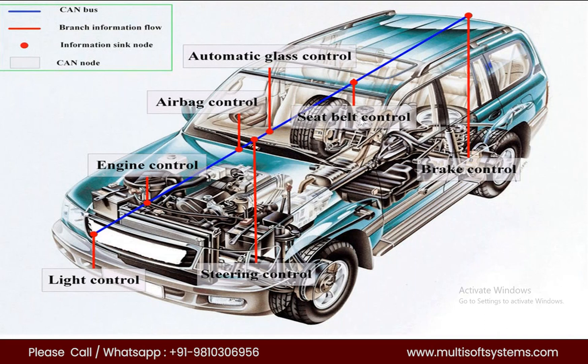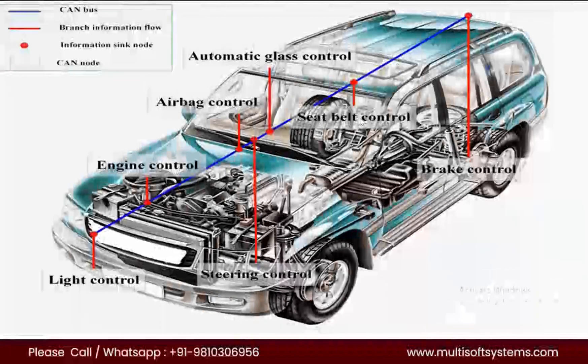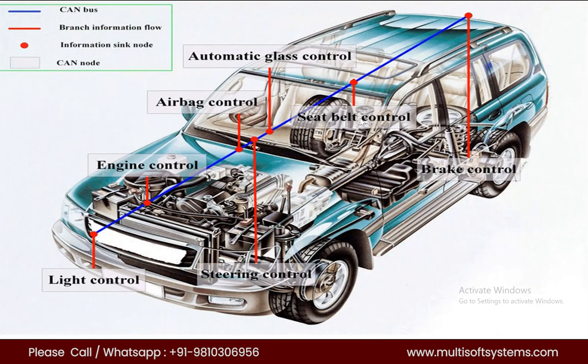Another important ECU is the braking system node. It is responsible for braking the wheels either when the driver presses the brake pedal, or when the camera detects an obstacle in front of the vehicle. If the driver does not press the brake pedal in time, the detection camera will send a message to the brake ECU, which acts on the brake system to avoid an accident. This mechanism is very important for driver safety.